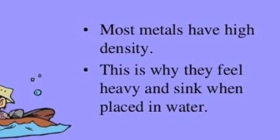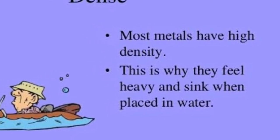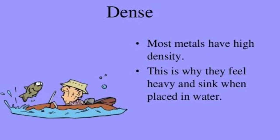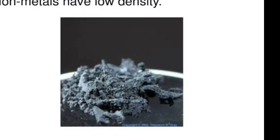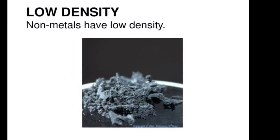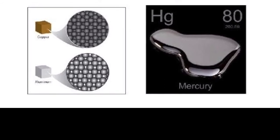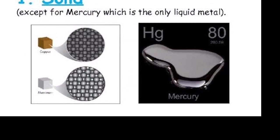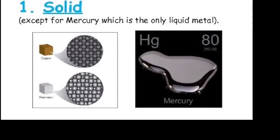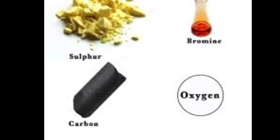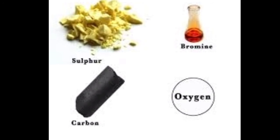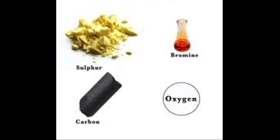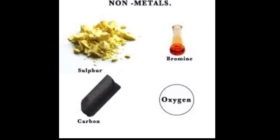Metals have high density, which is why they feel heavy and sink when placed in water — metals do not float. Non-metals have low density. All metals are solid at room temperature except mercury. At room temperature, non-metals are in a solid or gaseous state except bromine, which is a non-metal in liquid state. All other non-metals are either solid or gaseous.